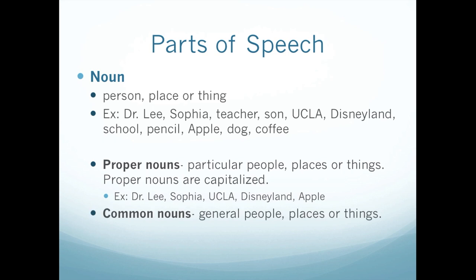The other type of noun is a common noun. Common nouns are just general people, places, or things. So for example, in the list above, all the lowercase ones like teacher, son, school, pencil, dog, and coffee — they're all common nouns. They are just general — not a specific teacher, not a specific dog, not a specific school, just general.